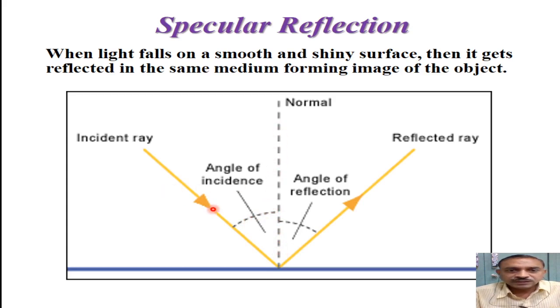This incident ray is reflected from the same surface in the same medium with an angle of reflection. We may call it theta R. If you observe this diagram, then the angle of incidence will be equal to the angle of reflection, which is known as law of reflection.